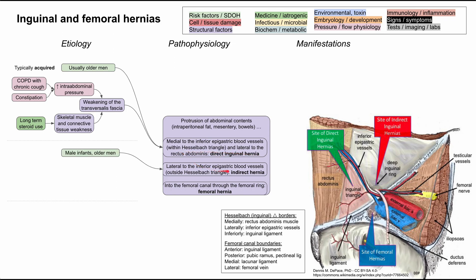Next, let's look at the etiology of the indirect inguinal hernia. This typically happens in older men as well, but also young male infants. This is typically a congenital disorder, as opposed to the acquired disorder of the direct inguinal hernia. Even though it's a congenital disorder, it might not become apparent until these people reach adulthood, even though it may be present since birth.